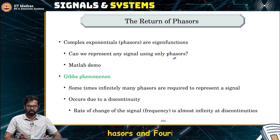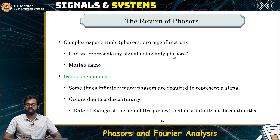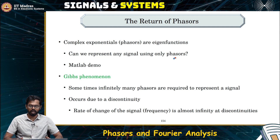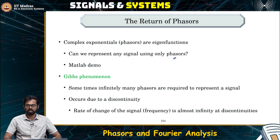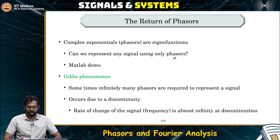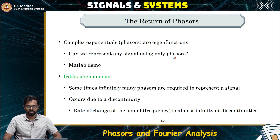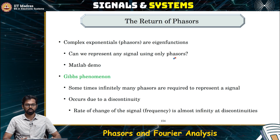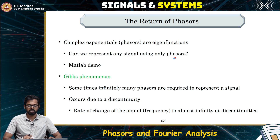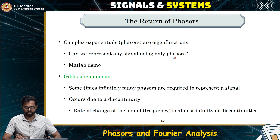We saw that complex exponentials, which are phasors, are nothing but the eigenfunctions of LTI systems. If we can represent any input as some linear combination of these phasors, then finding the output becomes very easy. But can we represent any signal using only these phasors? It turns out that most of the signals of our interest can be represented using only phasors, and we will see why this is true.